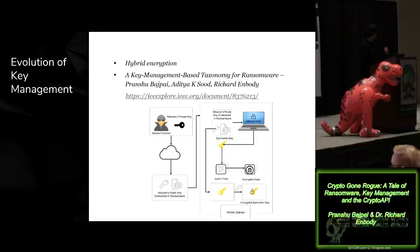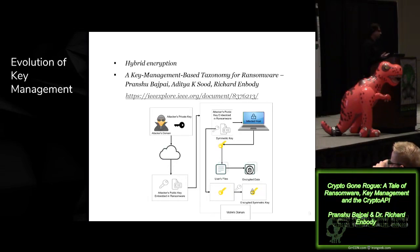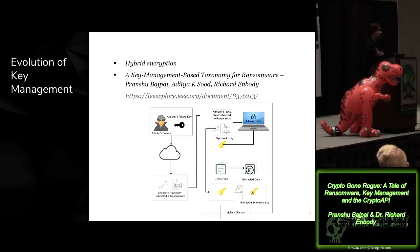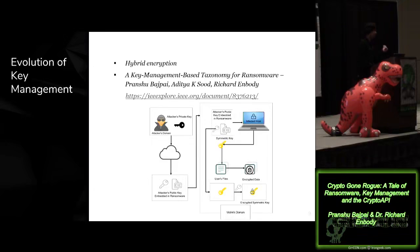The diagram explains how this is done. The ransomware has the attacker's public key embedded in it. It gets on the host, generates a symmetric key on the host, uses that symmetric key to encrypt the files, and then uses the embedded public key to encrypt the symmetric key and safely store it. The attacker, of course, holds the private key. There are variations to this approach, but basically a hybrid encryption scheme works in this manner.